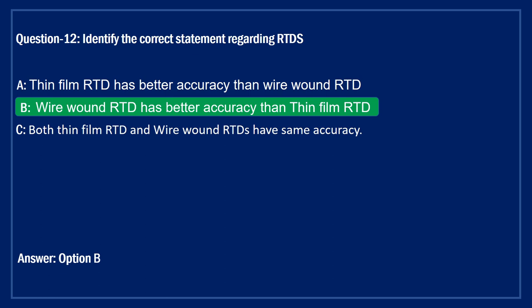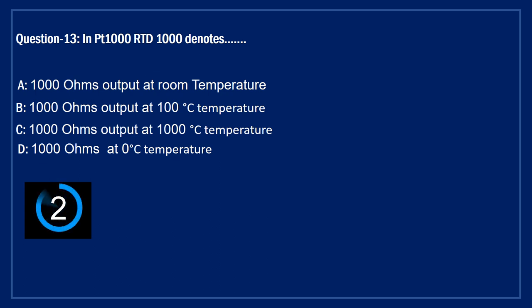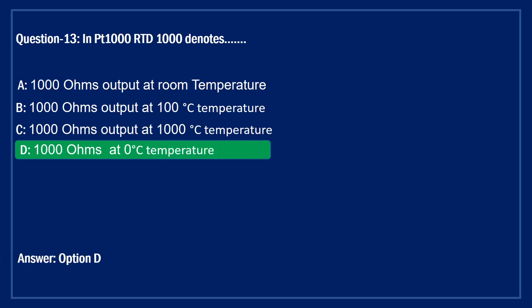Next question regarding PT-1000 RTD: the right answer is Option D — 1,000 ohms at 0 degree centigrade temperature.